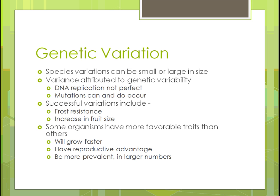Successful variations bred into plants include resistance to frost and increased fruit size — things like apples, oranges, or larger cobs of corn over time. Some organisms have more favorable traits than others: some grow faster, some can produce multiple crops during a season — like continuing to flower and produce pumpkins or peppers. And some varieties are more prevalent because they can reproduce on their own, resulting in larger numbers of that variety.